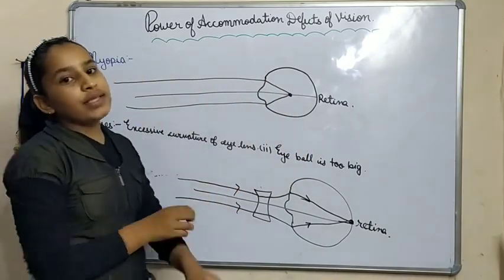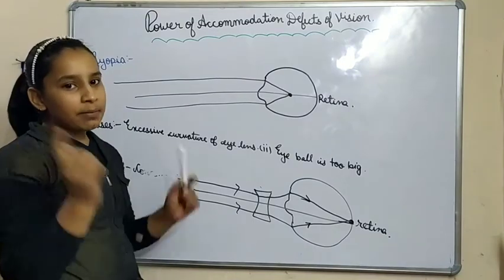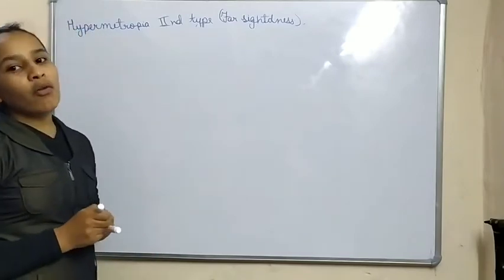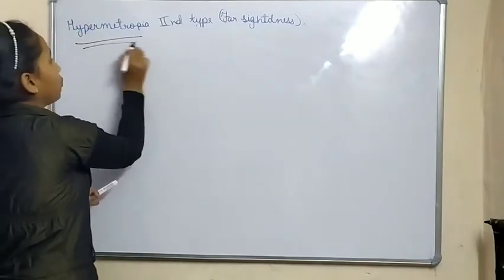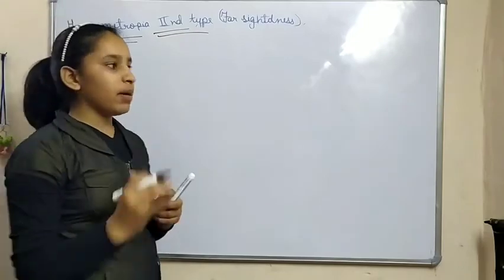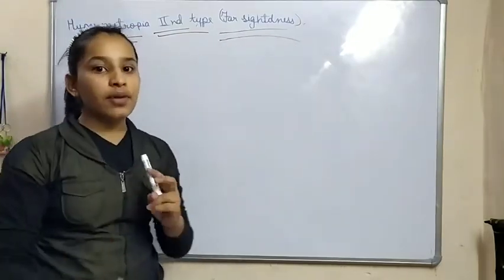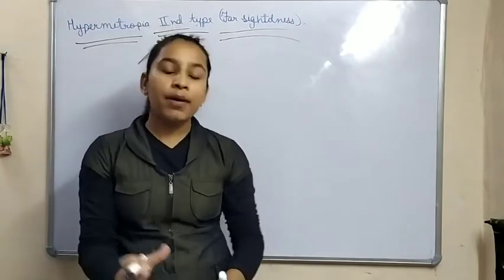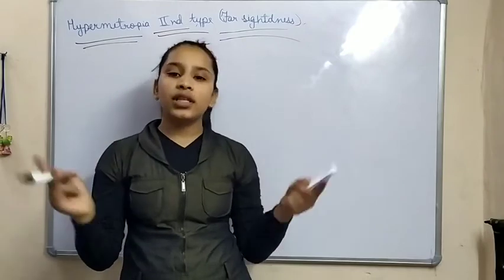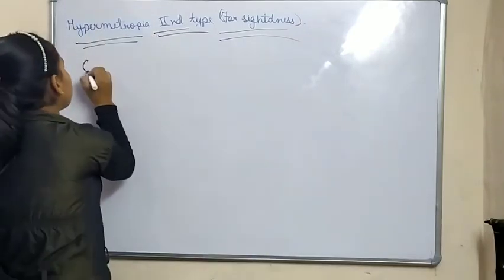Now we will see the second type of defect of vision: hypermetropia. Hypermetropia is also called farsightedness, because if a person is suffering from hypermetropia, they can see distant objects clearly but cannot see nearby objects clearly.